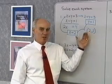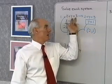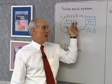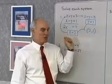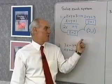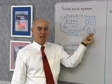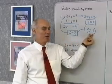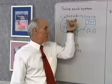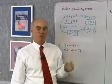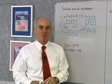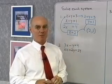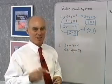You can check this by graphing both lines — you'll see that they intersect exactly at the point x equal to 2, y equal to 1. This method is really just an application of the addition property of equality. Let's try another one.